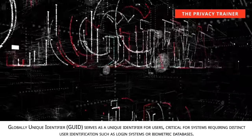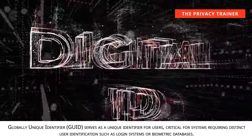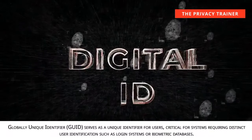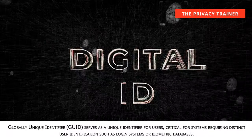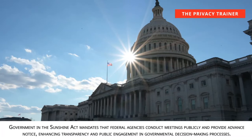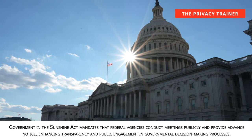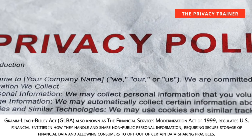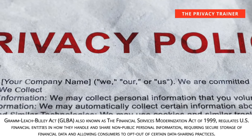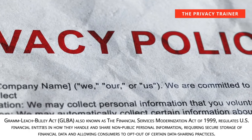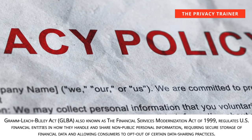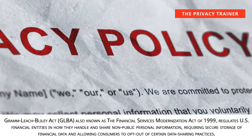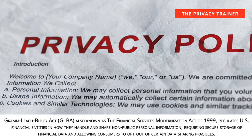Globally Unique Identifier, GUID. Serves as a unique identifier for users, critical for systems requiring distinct user identification such as login systems or biometric databases. Government in the Sunshine Act. Mandates that federal agencies conduct meetings publicly and provide advance notice, enhancing transparency and public engagement in governmental decision-making processes. Gramm-Leach-Bliley Act, GLBA. Also known as the Financial Services Modernization Act of 1999, it regulates U.S. financial entities in how they handle and share non-public personal information, requiring secure storage of financial data and allowing consumers to opt out of certain data-sharing practices.